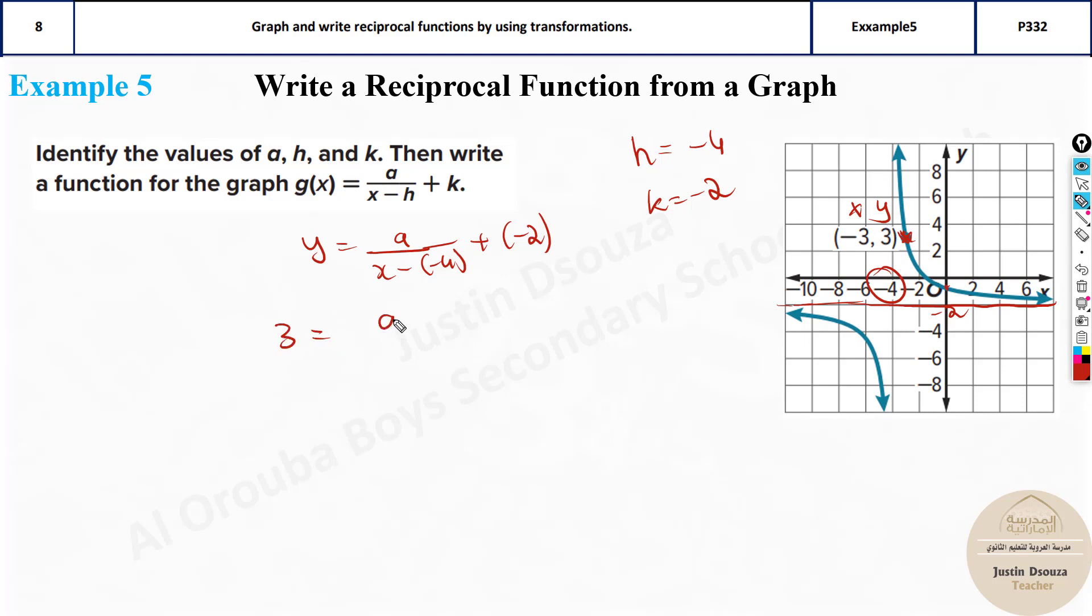What is y? It's 3, that is equal to a is unknown divided by x is minus 3. What is the h value? It is minus of minus 4. We have already written, sorry, it'll be minus of minus plus 4 then minus 2. You can directly put this in calculator or you can solve it. So what you can do is take this minus 2 to the other side. It'll be 5 equals a by 1, or a equals 5. So this is the value of a.